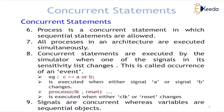For example, if we write c <= a or b, then a and b are the sensitivity list of that assignment. Whenever there is a change on signal a or b, the statement will execute; otherwise it will not execute. Similarly, in a process statement, after the process keyword there is a sensitivity list — for example, clock and reset. That means the process is only executed when there is a change on clock or reset. A change means the signal transitions from logic 0 to 1, 1 to 0, or any other transition among VHDL's nine logical values.